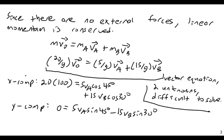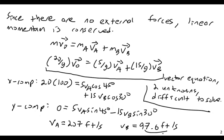And, now I have two equations. 200 equals 5 VA cosine 45 degrees, plus 15 VB times the cosine of 30 degrees. And, if I solve this system of equations, it's just a simple linear system, very trivial to solve. I can get that VA is equal to 207 feet per second. And, that VB is equal to 97.6 feet per second.